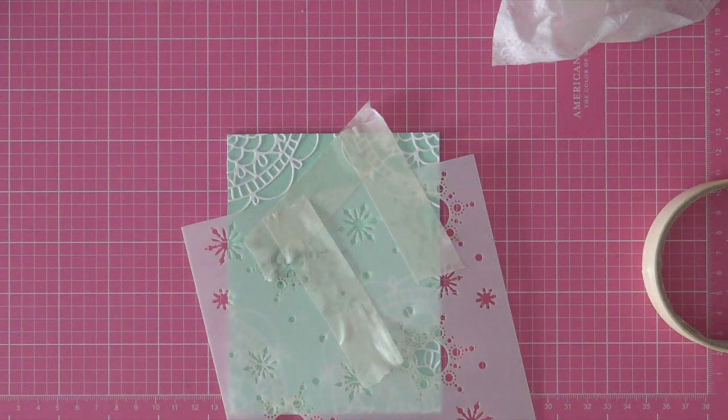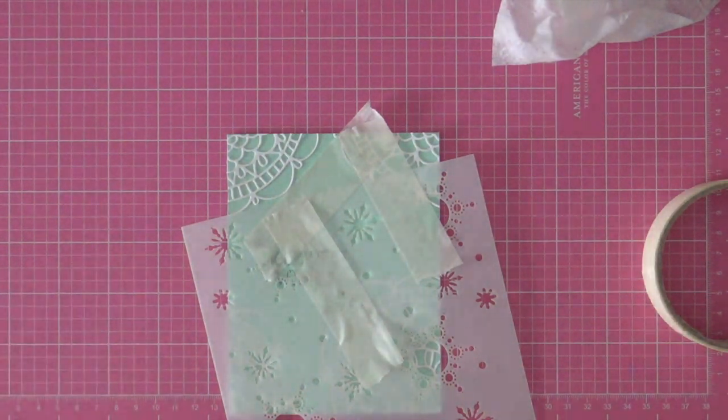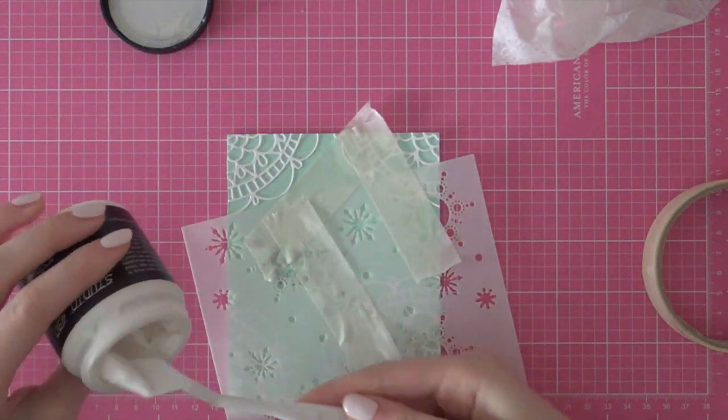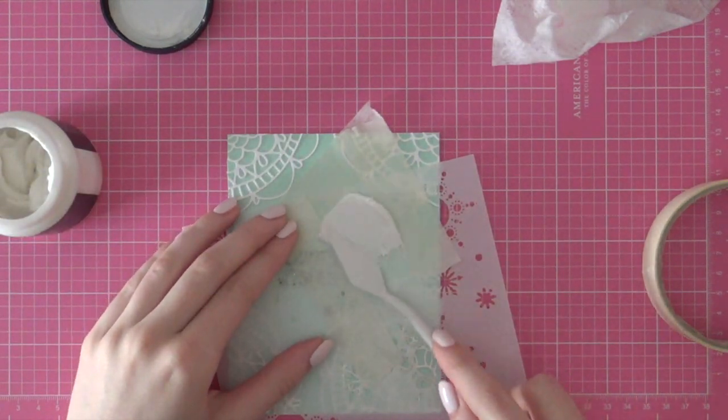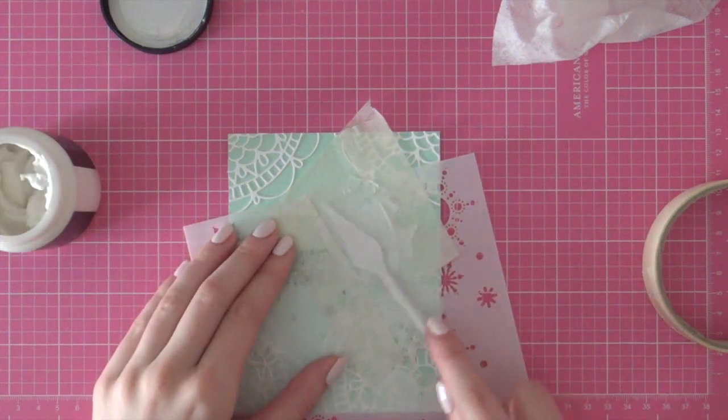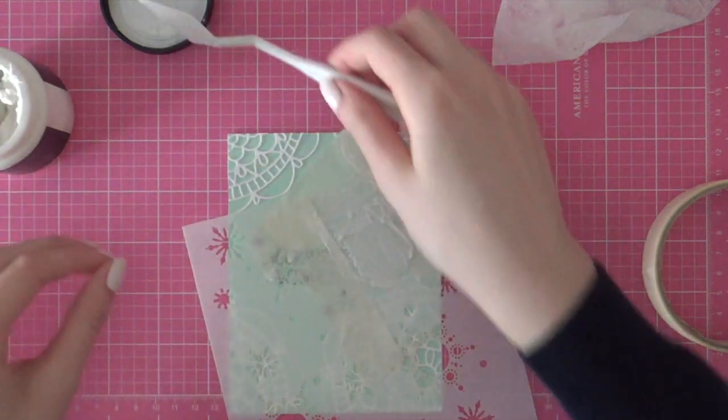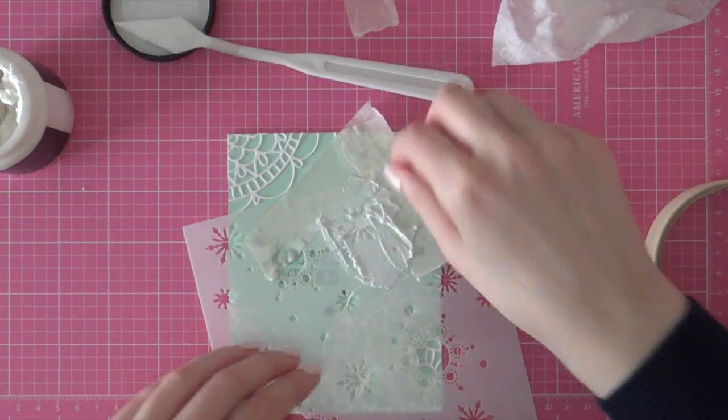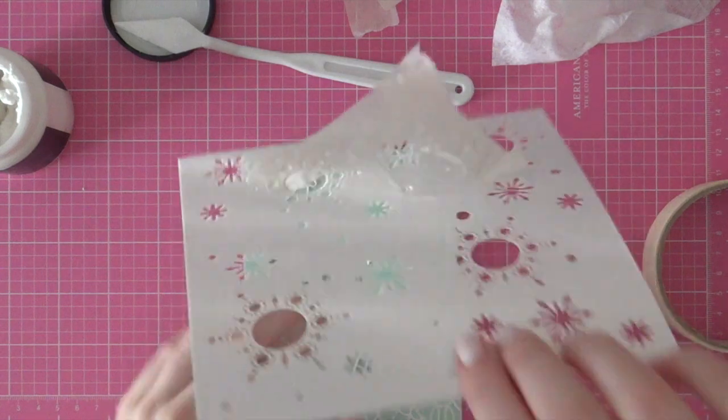I also wanted to add a little bit of dimension using a stencil. This is a stencil from Create a Smile Stamps and it was part of their Snow Dance kit. So I am using that stencil along with Wendy Vecchi White Embossing Paste. I masked off the other images since I only wanted some snowflakes and some little dots. So I scraped off that excess, put the excess back into the jar.